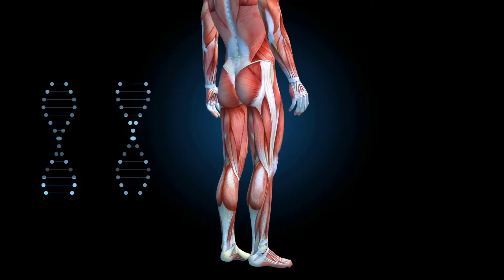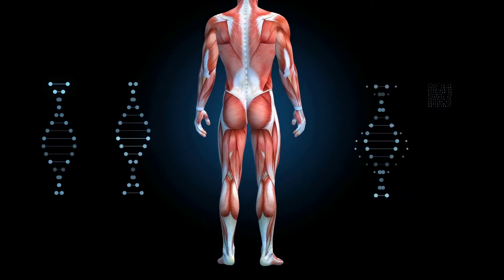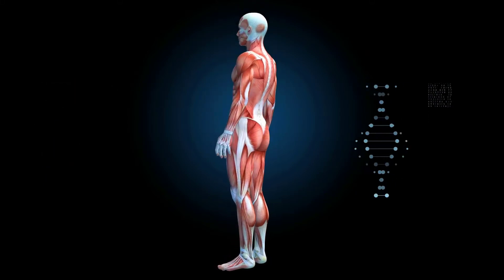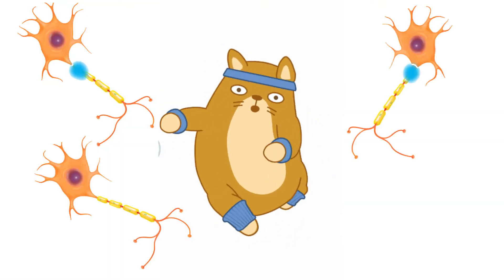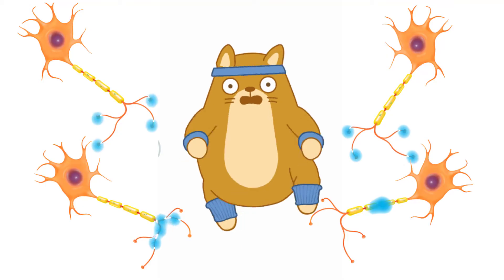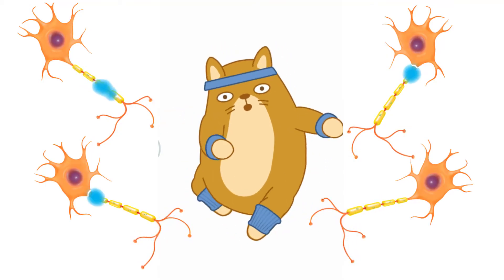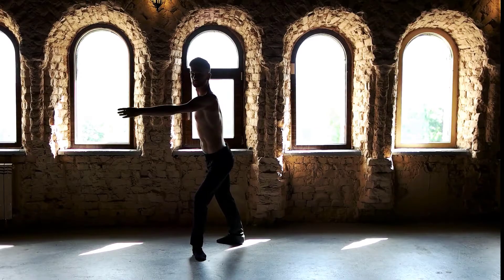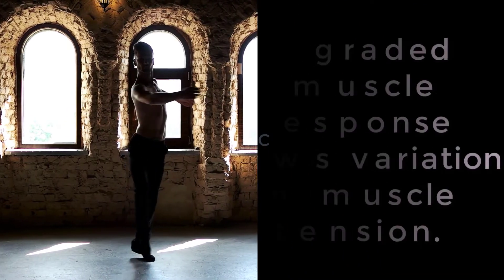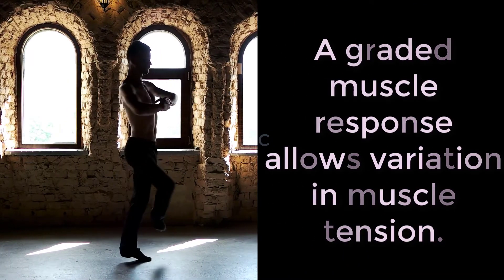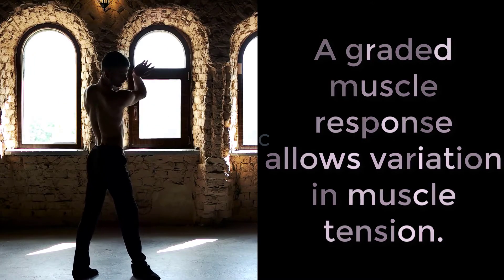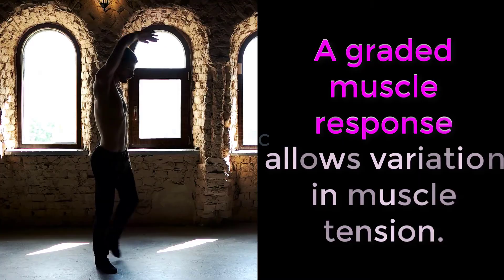Although a person can experience a muscle twitch, a single twitch does not produce any significant muscle activity in a living body. A series of action potentials to the muscle fibers is necessary to produce a muscle contraction that can produce work. Normal muscle contraction is more sustained and can be modified by input from the nervous system to produce varying amounts of force. This is called a graded muscle response.